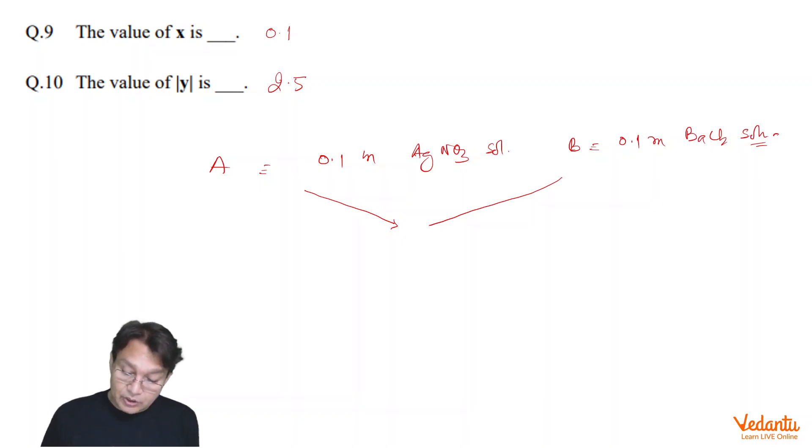When we add equal volume, then we know immediately the concentrations become half. So, the concentration of AgNO3 will be 0.05 molal and this will be 0.05 molal.